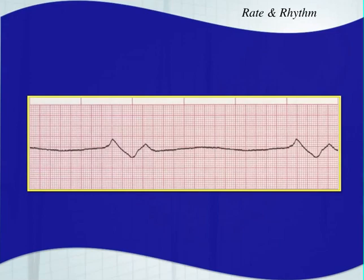This one is very slow with only two beats — a rough estimate of about 20 beats per minute. This patient would be very ill. We can't even determine regularity with only two complexes; we'd need to print a bigger strip to identify the regularity of that rhythm.